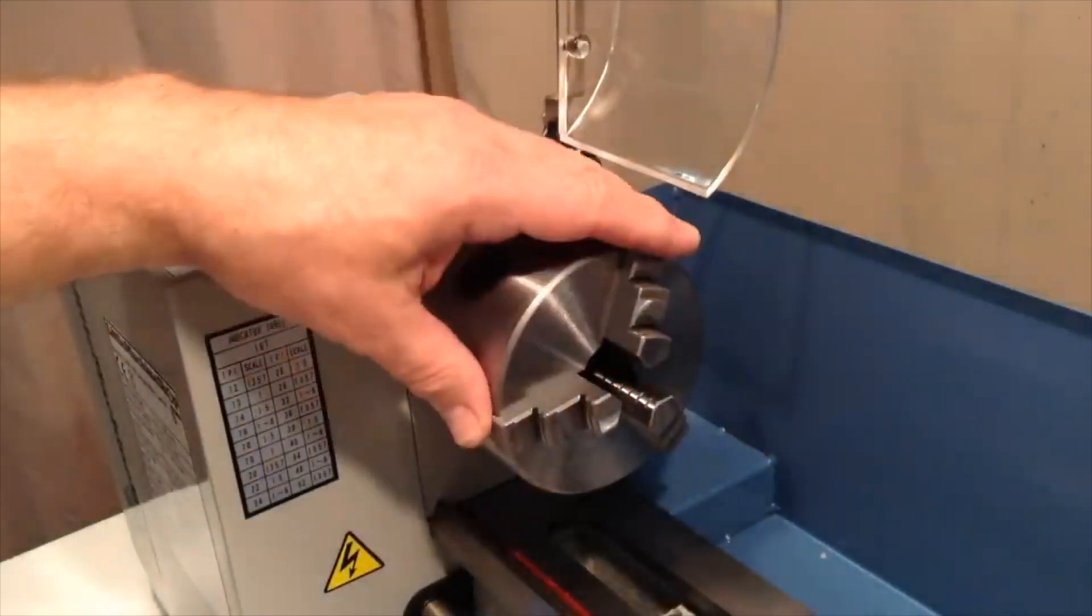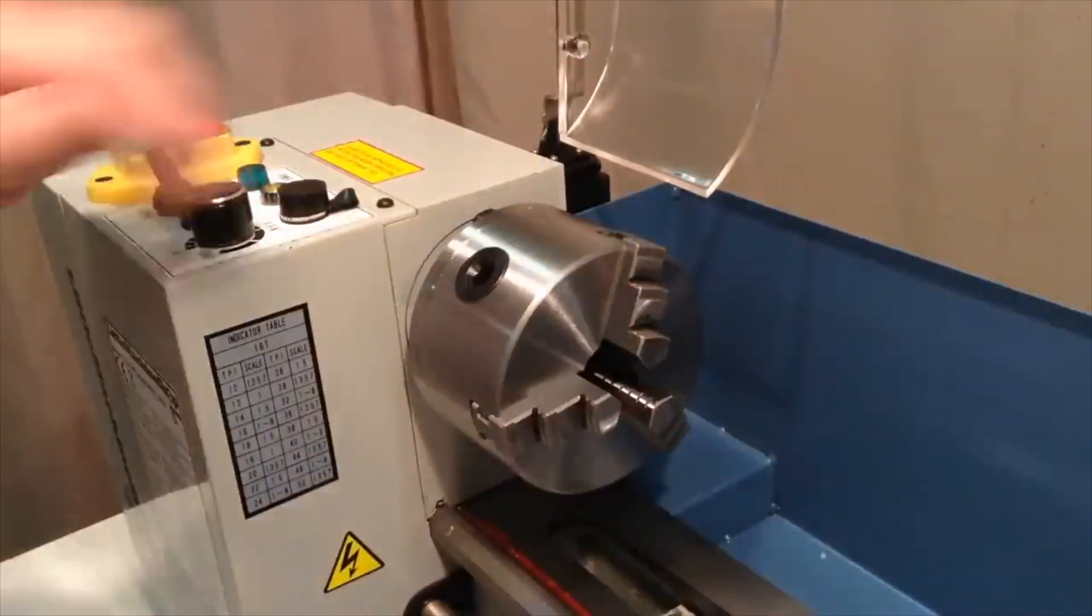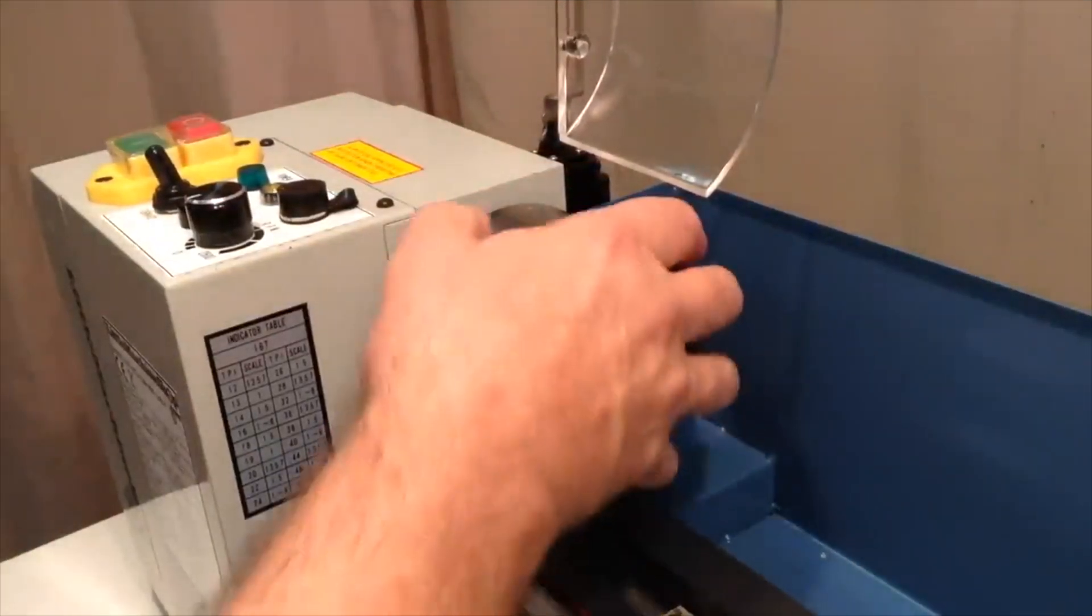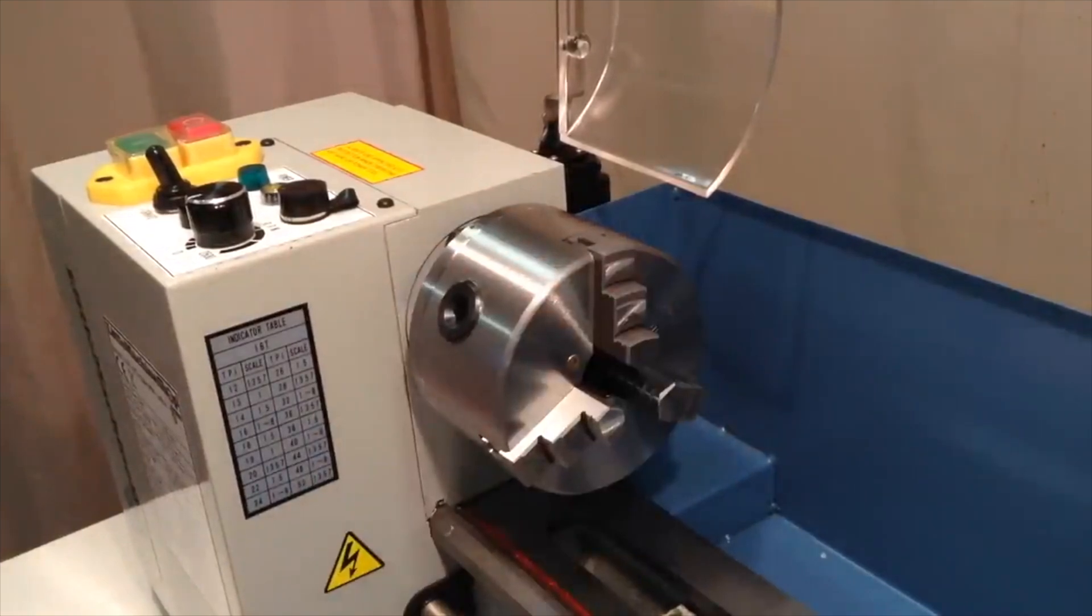You can also of course remove this and put a four jaw chuck in place. It does not come with the four jaw but that's available as an accessory. So let's take this off and look at the spindle behind it.